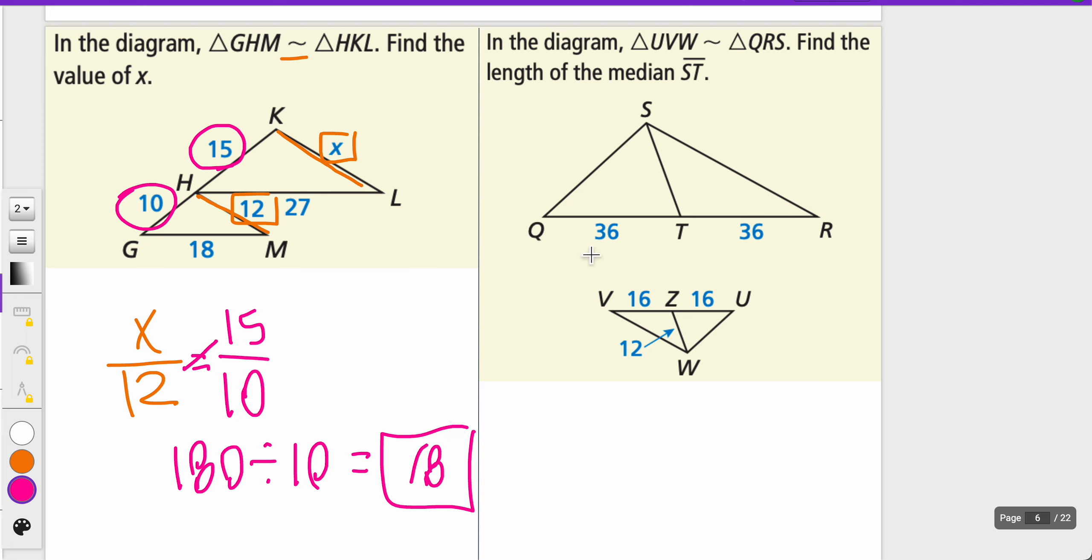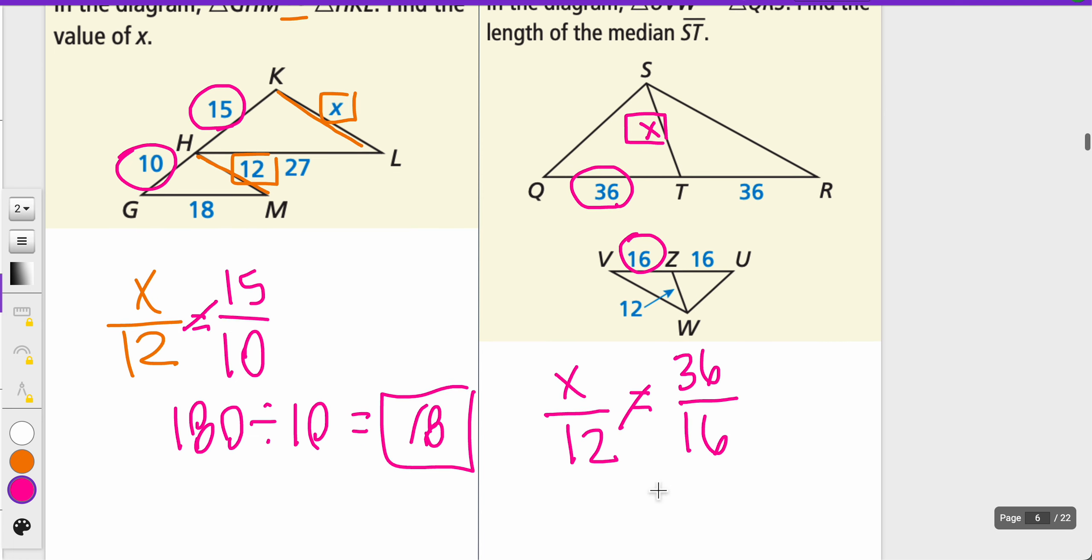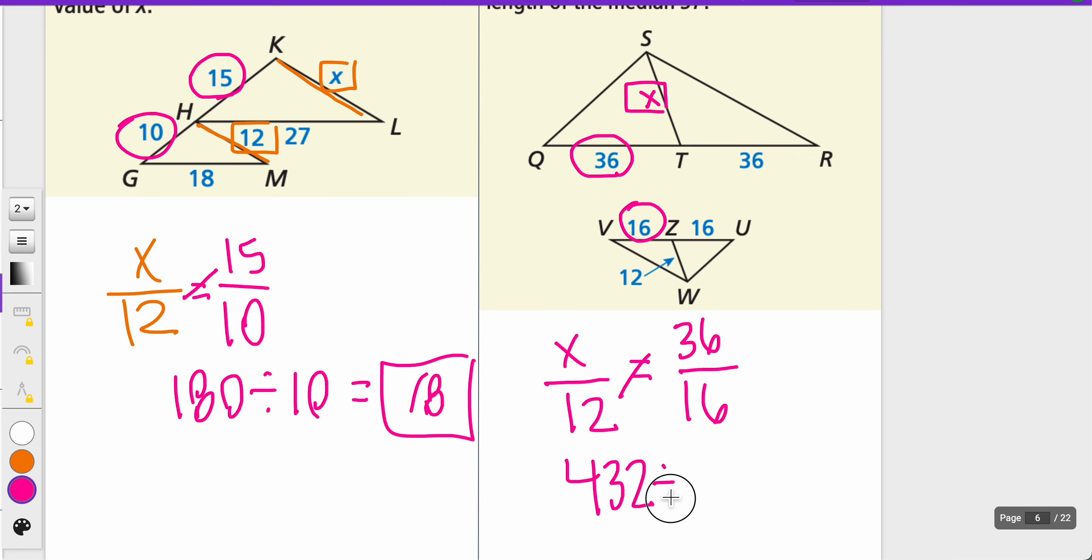In this diagram on the next page, UVW is similar to QRS. Find the length of the median ST. Again, this is proportional reasoning. I don't know what ST is, so I'm going to say that is X, and right now X is matching with 12. So X over 12, and then maybe 36 matches with 16, so 36 over 16. Solving that proportion, 12 times 36 is 432, divide that by 16, and we get 27. So that median would be 27.